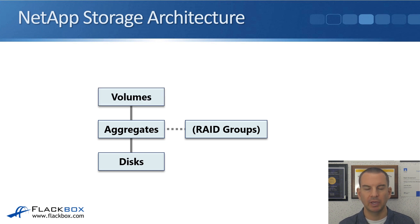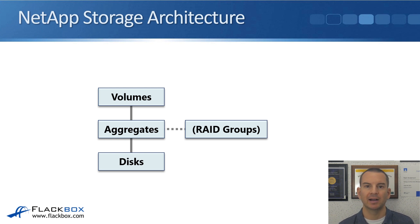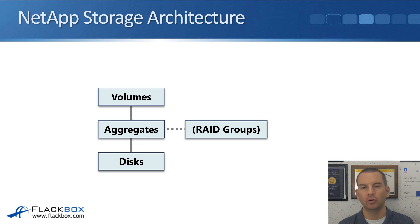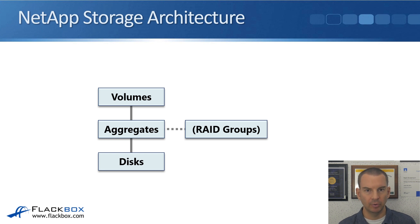Moving up, the next thing we have is the volume. The volume is the lowest level that clients can access their data at, and the volume goes into an aggregate. With your aggregate you could have a single volume or multiple volumes in the same aggregate. Clients can access their data at the volume level, not at the aggregate level.